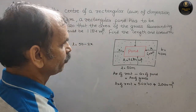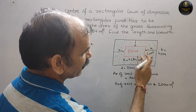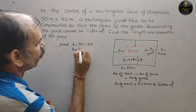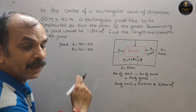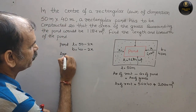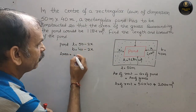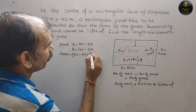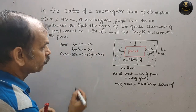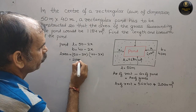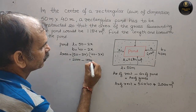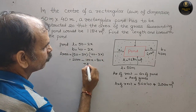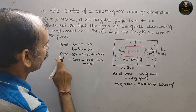Similarly, for the breadth, there is x on each side, so breadth of the pond = 40 − 2x. The area of the pond is (50 − 2x)(40 − 2x), which expands to 2000 − 100x − 80x + 4x², giving us the area of the pond.